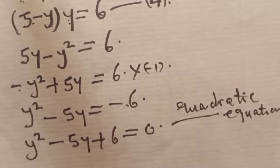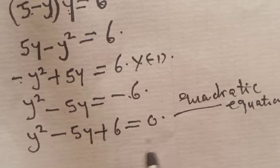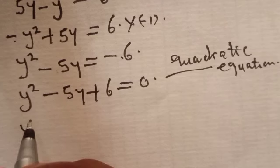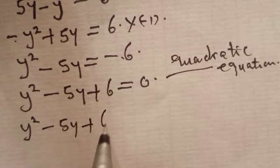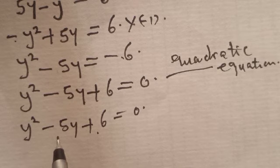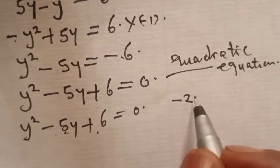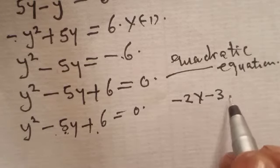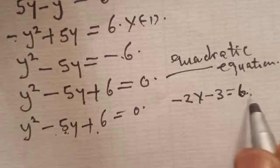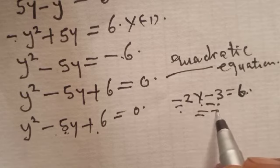This is a quadratic equation. Let's solve it. We are looking for the value of y from the equation y squared minus 5y plus 6 equals 0. We need two values that multiply together to give plus 6, and when added together give minus 5. Those values are minus 2 and minus 3, since minus 2 times minus 3 equals plus 6, and minus 2 plus minus 3 equals minus 5.